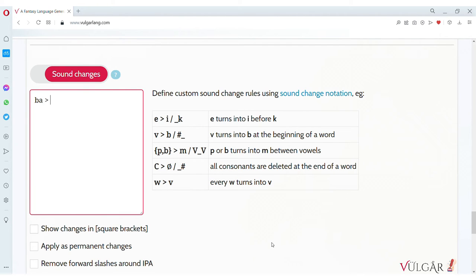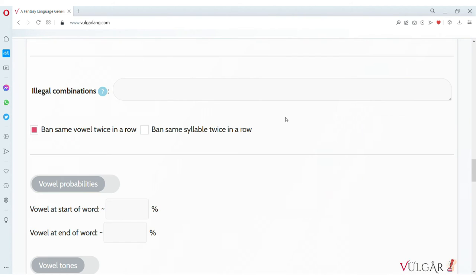Many users use the sound change option to further tweak how their words come out. Be aware that this is sometimes not the right tool for the task. If you're making a sound change rule because you don't like the look of a certain combination of phonemes, you should really just add an illegal combination.